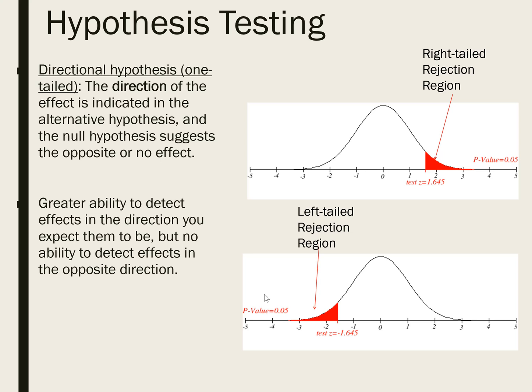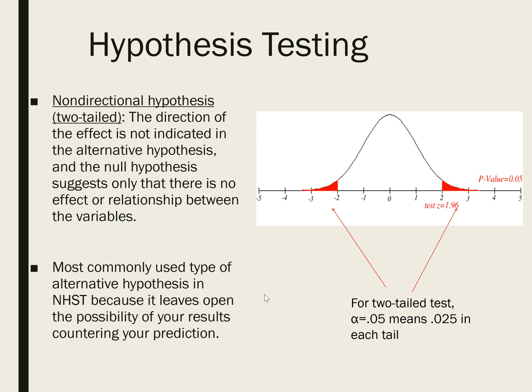Researchers usually have a direction in mind — they have a way that they expect their results to turn out. Data don't always do what we want them to do, but a researcher will usually have a hypothesis, a prediction, regarding how they expect the results to turn out. If they do a one-tailed test, it gives them more statistical power, or the ability to detect an effect in the direction that it is predicted. But a one-tailed test gives you no power or no ability to detect an effect in the direction that counters what you predict.